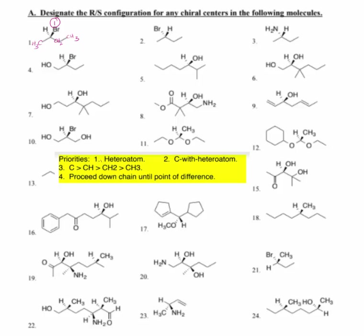With my priority set here, CH2 is greater than CH3. That means CH2 is going to be number two, and CH3 is going to be number three. With hydrogen held to the rear, I rotate clockwise. So this is an R configuration — R 2-bromobutane.